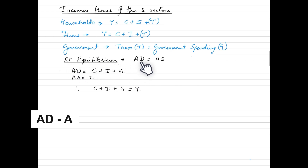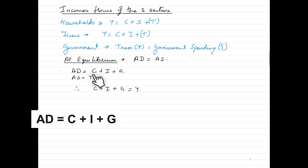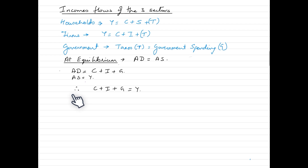There are two approaches to equilibrium. The first is the Aggregate Demand–Aggregate Supply (AD-AS) approach. Since we have three sectors, aggregate demand has three components: consumption expenditure, investment expenditure, and government expenditure. Aggregate supply equals national income (Y). The equilibrium condition is: C + I + G = Y.